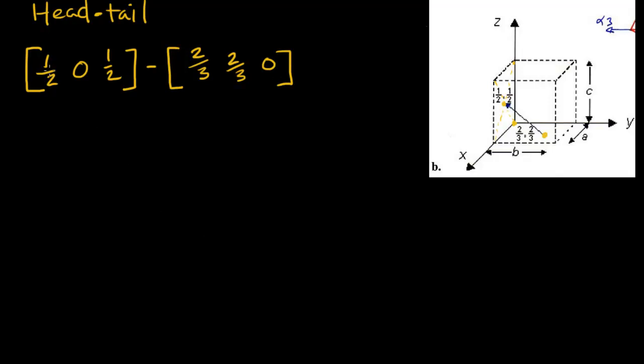Let's put everything under a common denominator so we can actually perform our subtraction. We'll make this 3 over 6, 0, 3 over 6, and we'll make this 4 over 6, 4 over 6, 0.